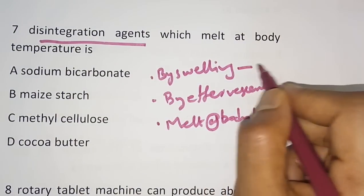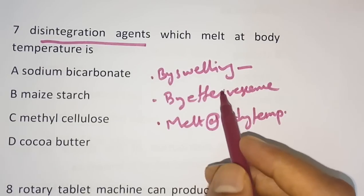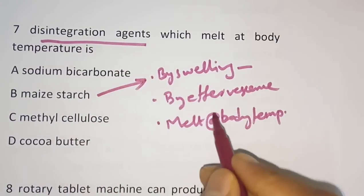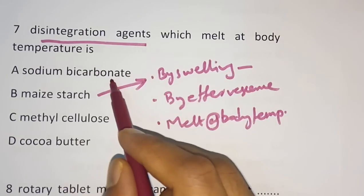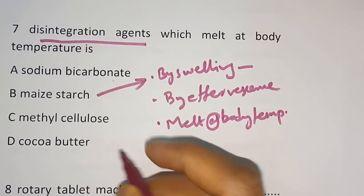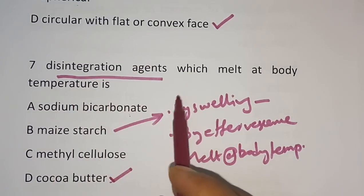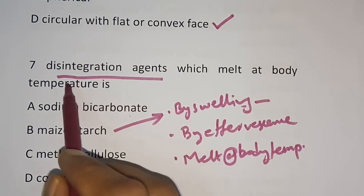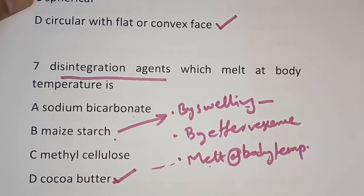The disintegrating agent that melts at body temperature is cocoa butter. So the correct answer here is cocoa butter. To summarize: by swelling — example is maize starch; by effervescence — examples are sodium bicarbonate, citric acid, and tartaric acid; by melting at body temperature — example is cocoa butter.